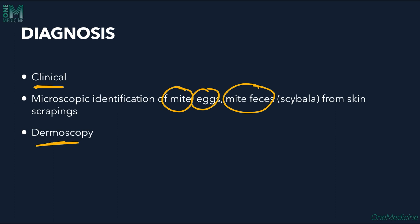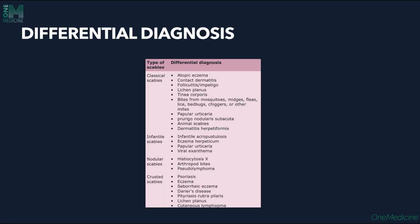Differential diagnosis of classical scabies includes atopic eczema, contact dermatitis, folliculitis, lichen planus, tinea corporis, insect bite reactions, and other causes of papular urticaria. Infantile scabies needs to be differentiated from infantile dermatoses such as infantile acropustulosis, eczema herpeticum, papular urticaria, and viral exanthema.